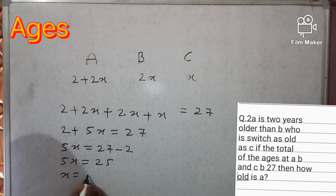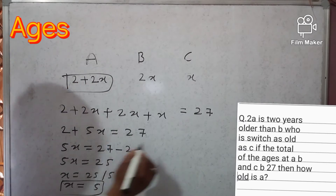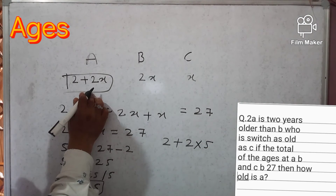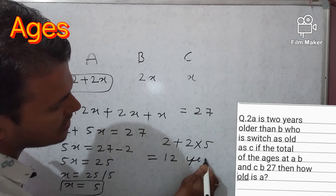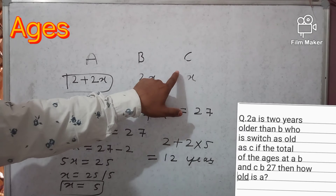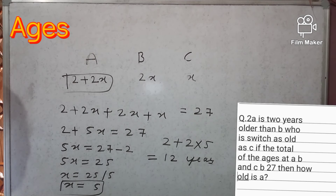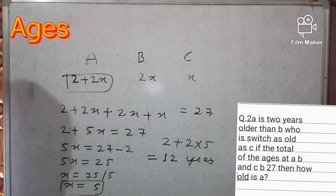So x equals 25 divided by 5, giving x equals 5. Our target is to find A's age. A equals 2 plus 2x, so substituting: 2 plus 2 times 5 equals 2 plus 10, which equals 12. So A is 12 years old. A plus B plus C equals 27, C is x equals 5, B is twice C equals 10, and A is 2 plus 2x equals 12.